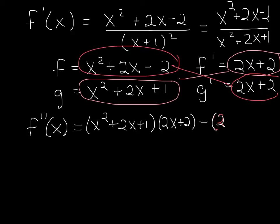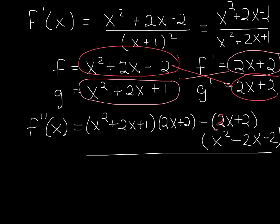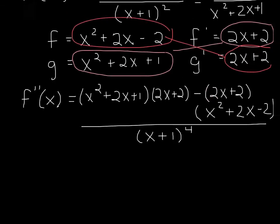2x plus 2 times x squared plus 2x minus 2. And all of this is over our denominator squared, but to keep things simpler, I'm going to go back to that factored form. So it's x plus 1 squared squared, which gets us to x plus 1 to the fourth.